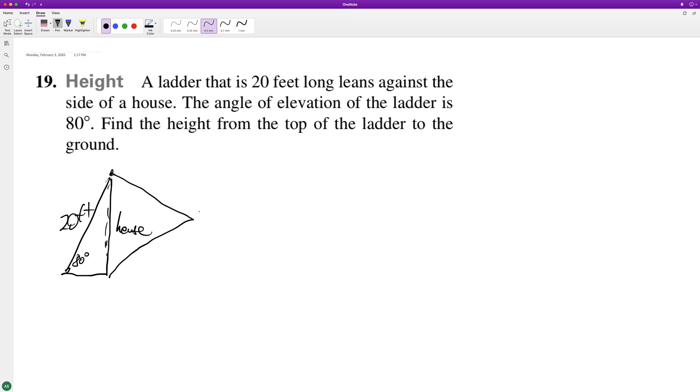To solve this, sine of 80 degrees equals the side of the house over the hypotenuse, which is the ladder. So the house height is equal to 20 times the sine of 80 degrees.